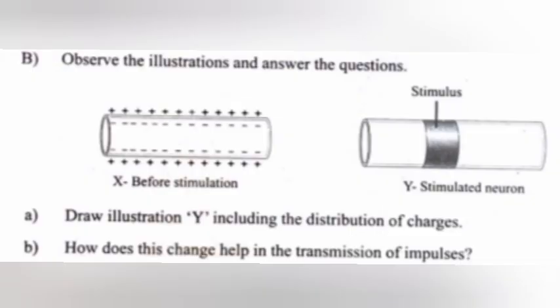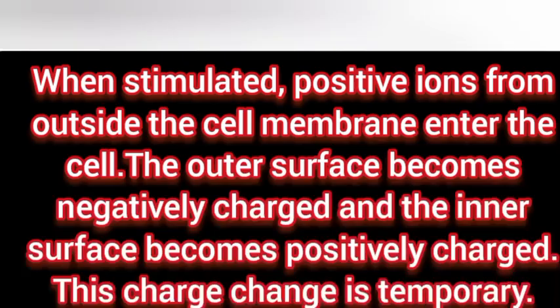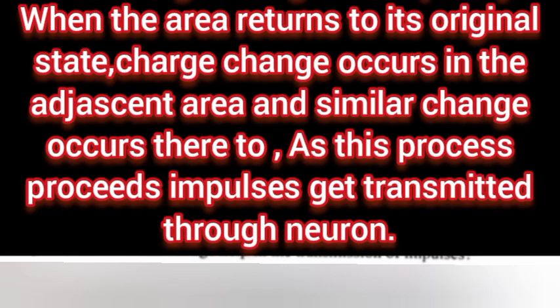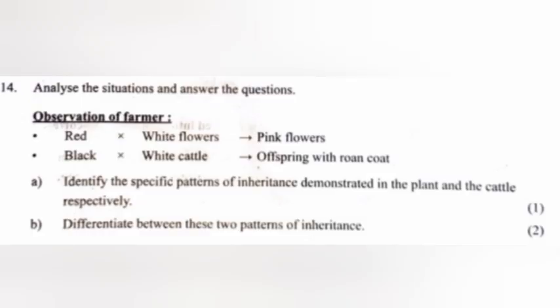Part B: Observe the illustrations and answer the questions. Draw illustration Y including the distribution of charges. How does this change help in the transmission of impulses? Answer: When stimulated, positive ions from outside the cell membrane enter the cell. The outer surface becomes negatively charged and the inner surface becomes positively charged. This charge change is temporary. When the area returns to its original state, charge change occurs in the adjacent area and a similar change occurs there too. As this process proceeds, impulses get transmitted through the neuron.